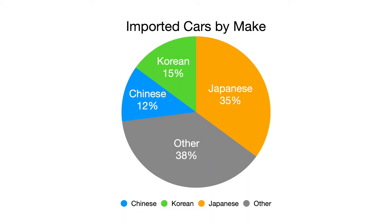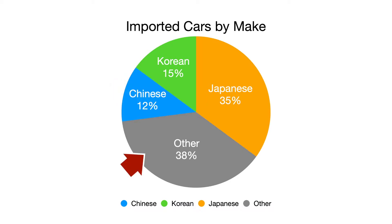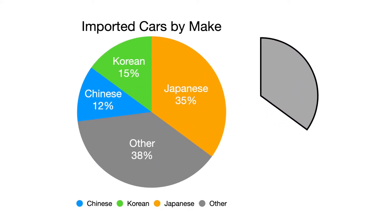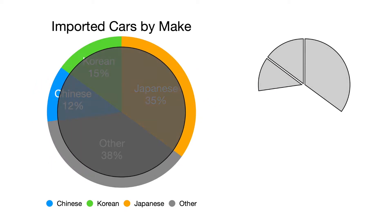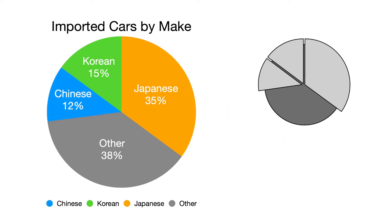Let's get into it. This is the chart created using the charting function in Keynote — not very exciting. What I'm going to do is create the three segments of the pie: the 35% Japanese make, the 15% Korean make, and the 12% Chinese make, including the segment that represents other. To do that, I'll draw a circle and cut out a segment of it, and repeat that for all segments. For the 'other' segment, I will draw a slightly smaller circle and send it to the back layer.